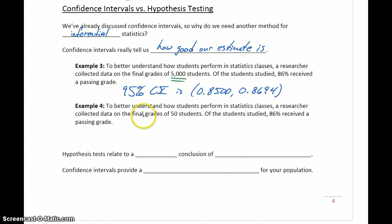In Example 4, we have essentially the same question, but this time only 50 students. Data was only collected on 50 students. In this case, our 95% confidence interval estimate would be 0.7264 to 0.9372.